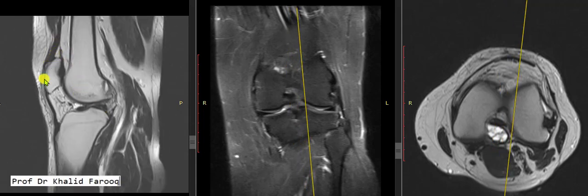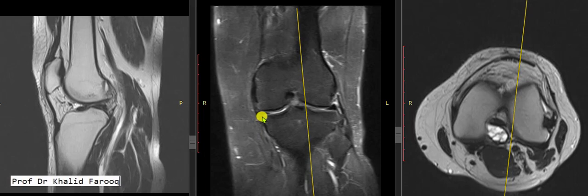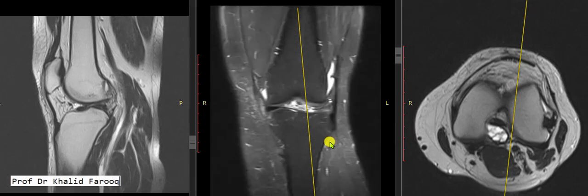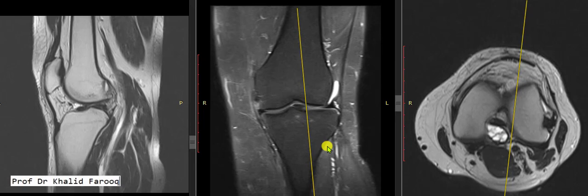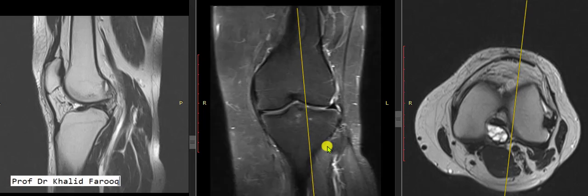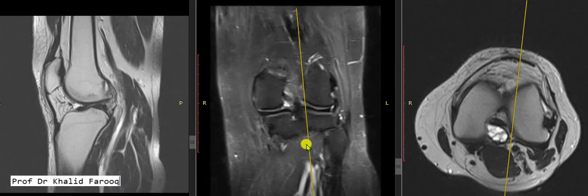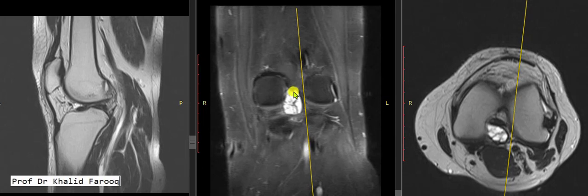There is mild posterior bulge of the posterior capsule of the knee. Overall, the quadriceps and patellar tendons appear normal. The infrapatellar Hoffa's fat pad is unremarkable. The medial and lateral menisci appear unremarkable — both menisci show normal signal and morphology. Collateral ligaments are normal as well.